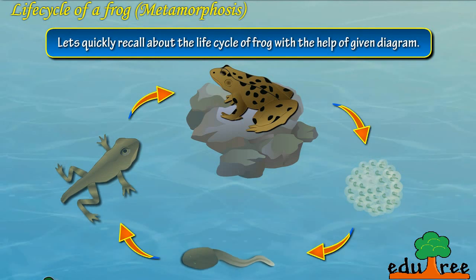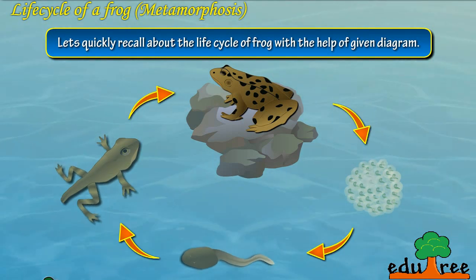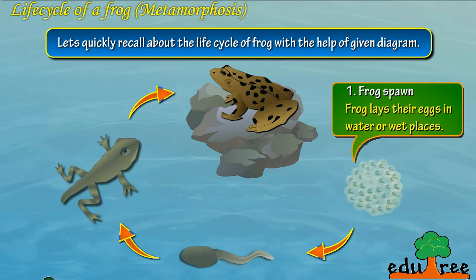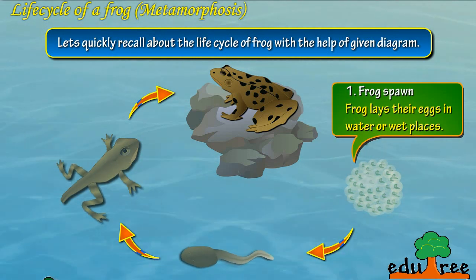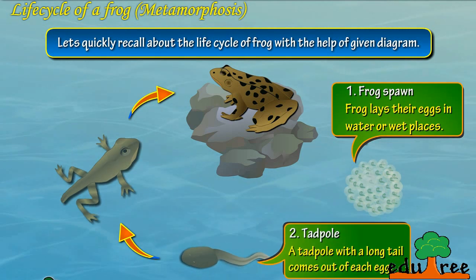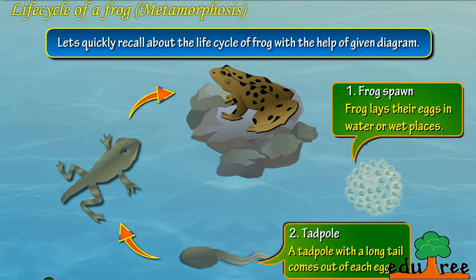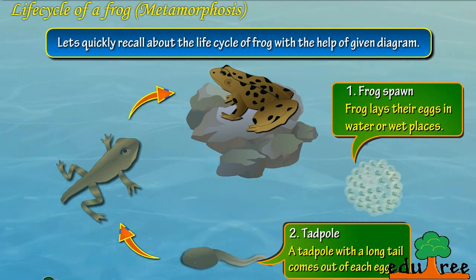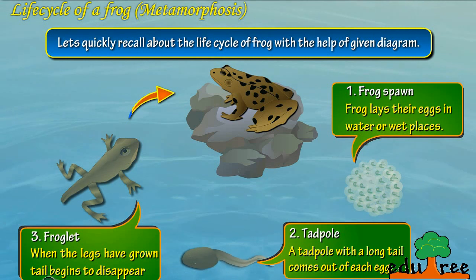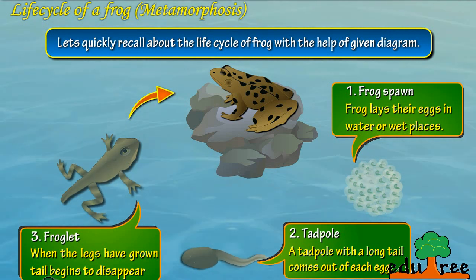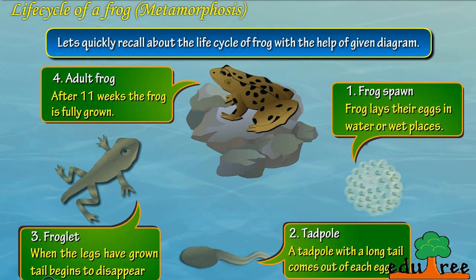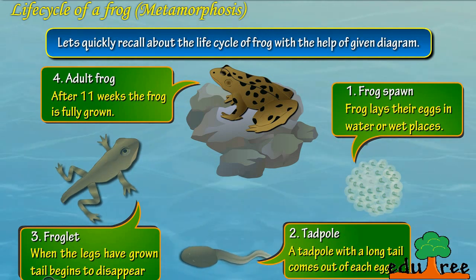Let's quickly recall the life cycle of a frog with the help of the given diagram. Stage 1: Frog lays their eggs in water or wet places. Stage 2: A tadpole with a long tail comes out of each egg. Stage 3: When the legs have grown, the tail begins to disappear. Stage 4: After 11 weeks, the frog is fully grown.